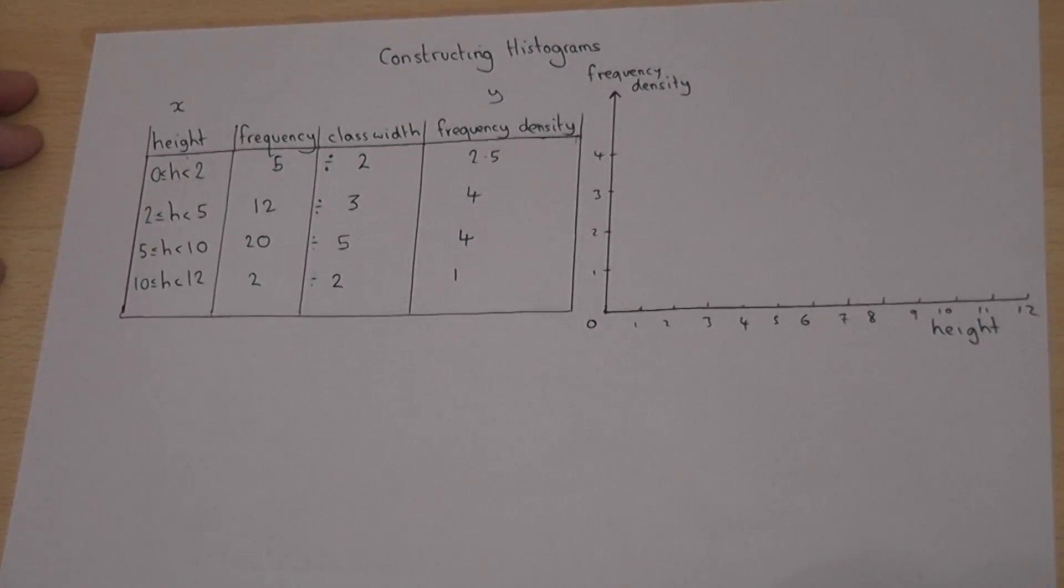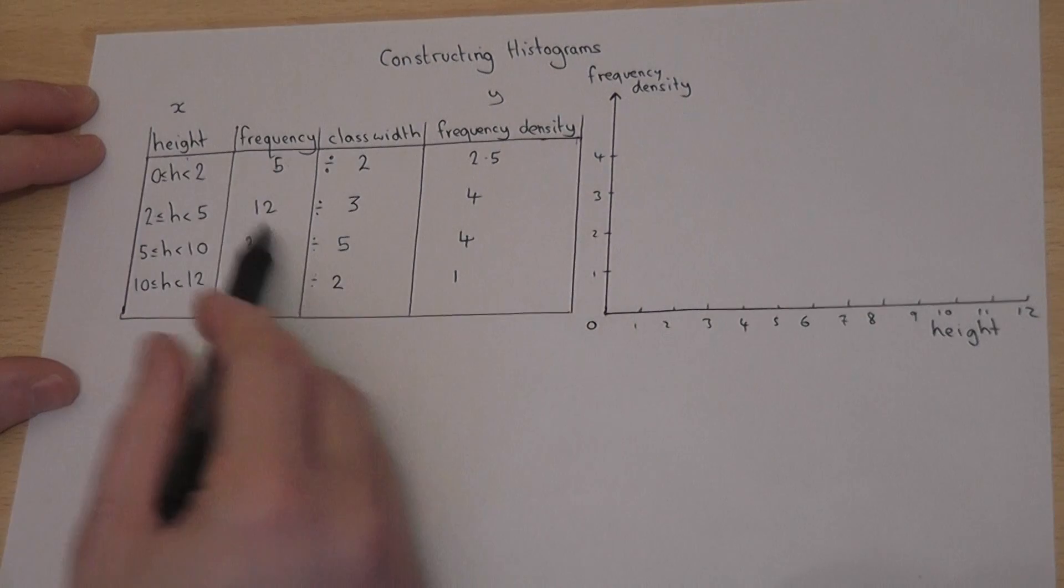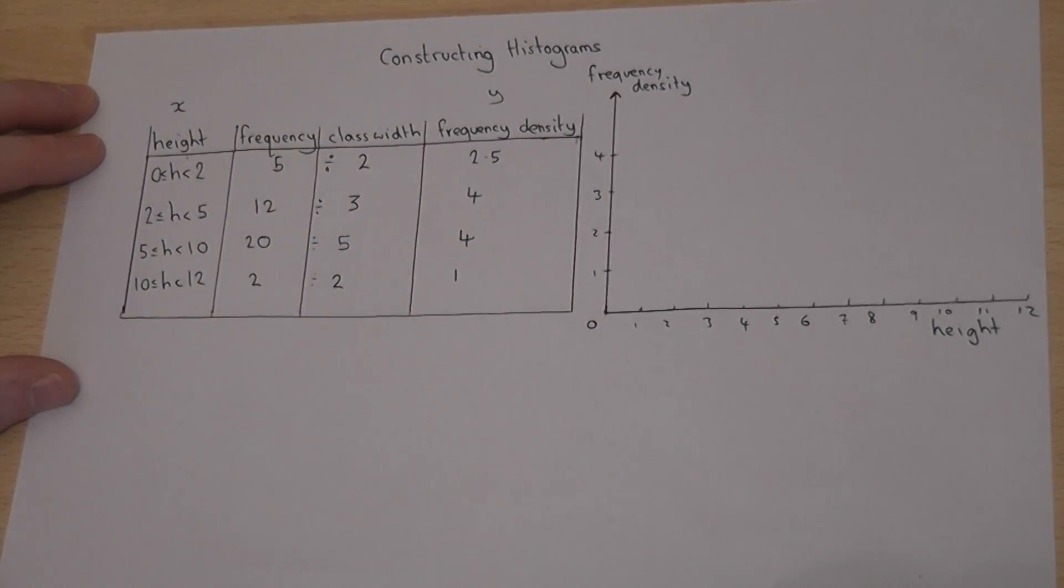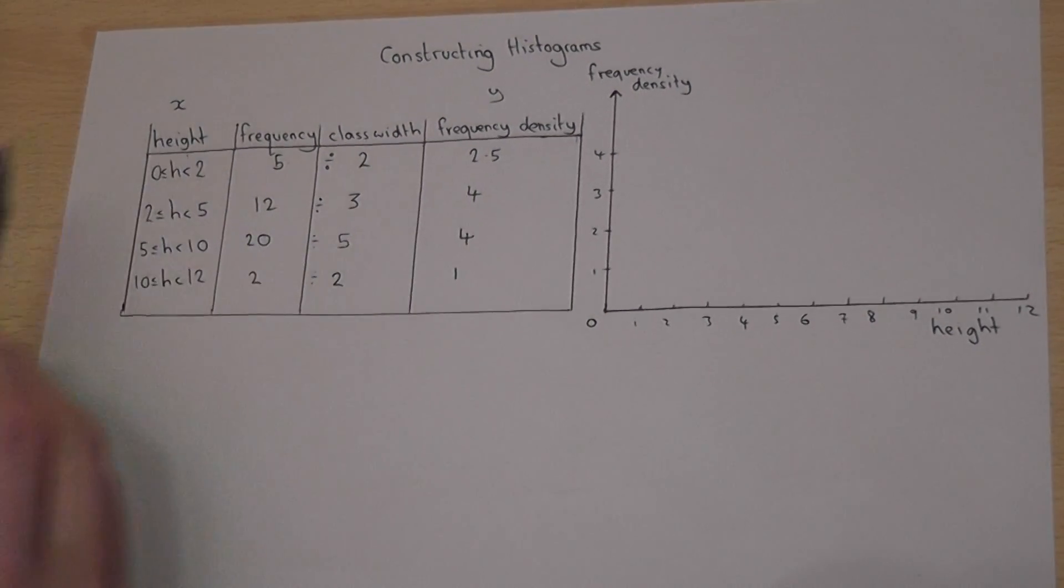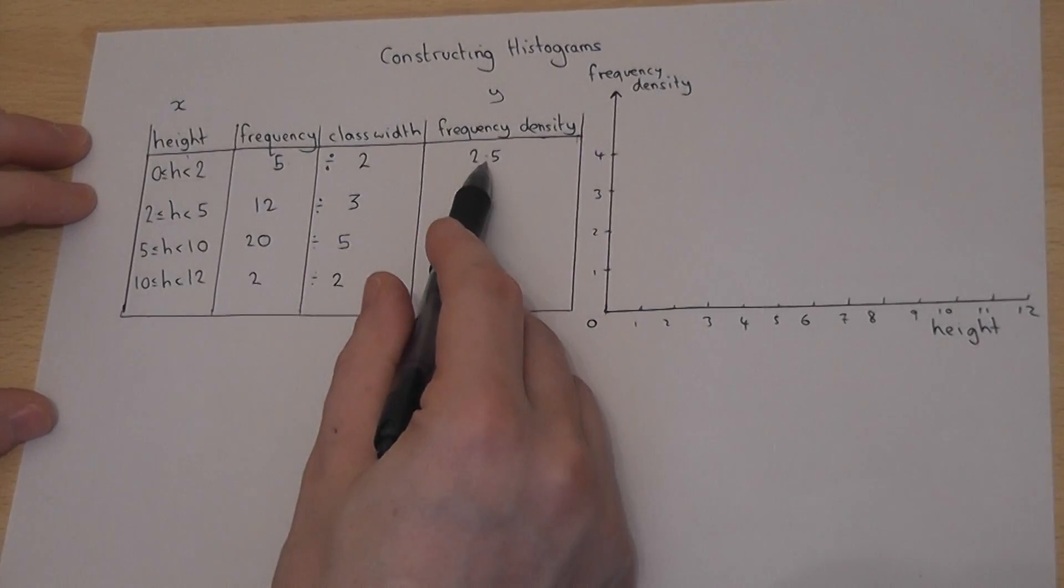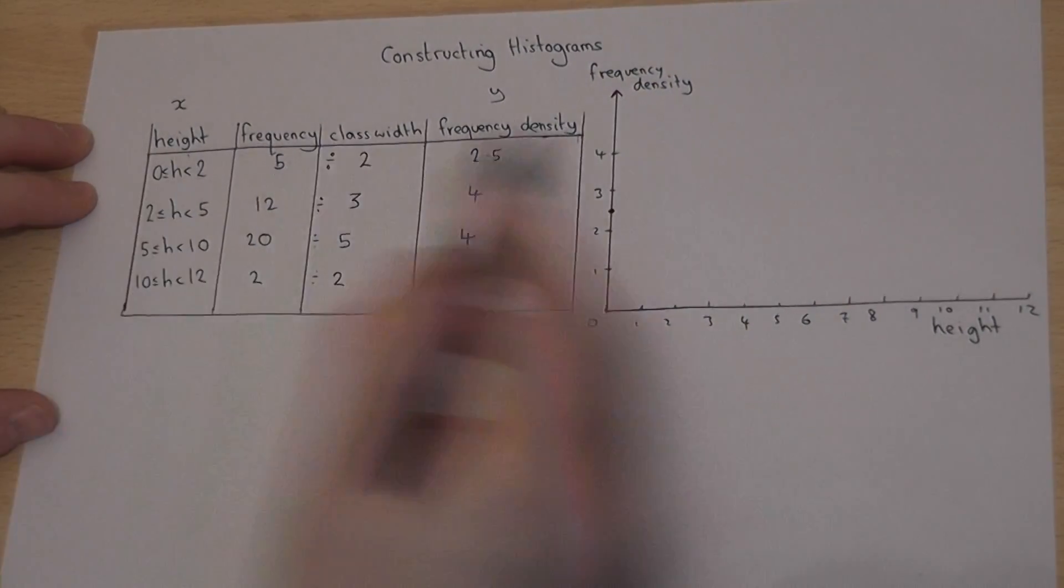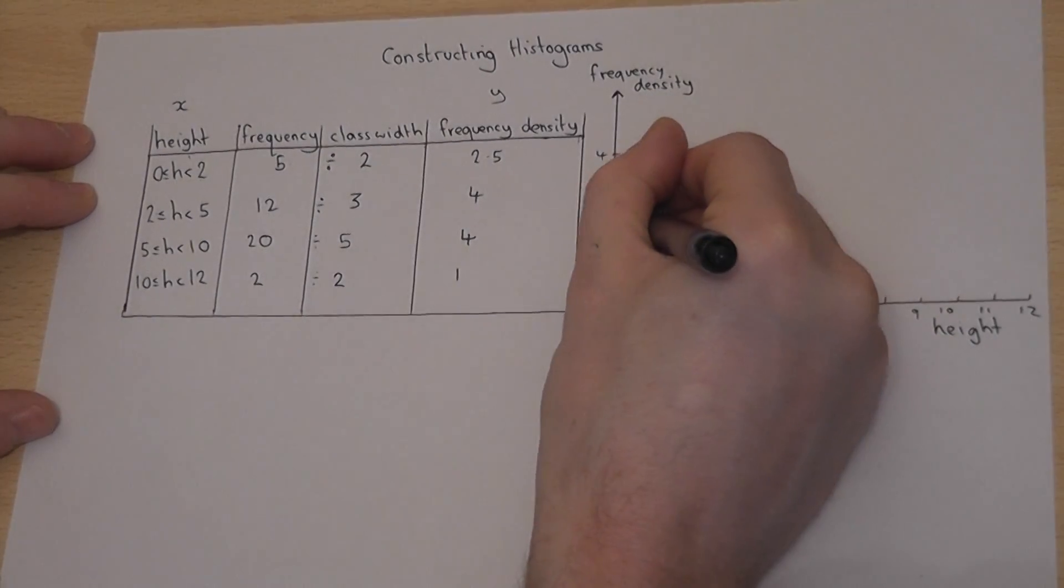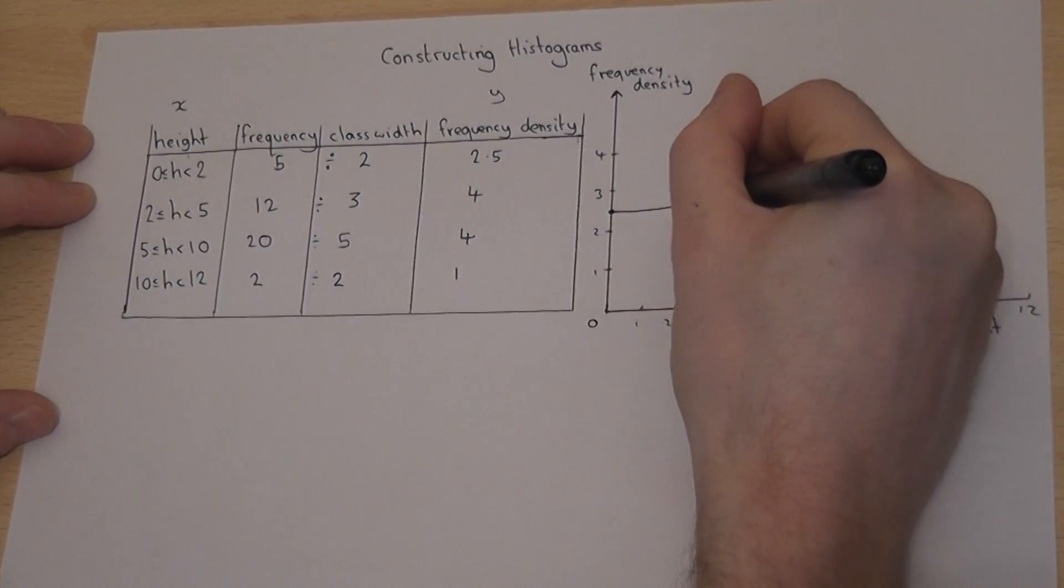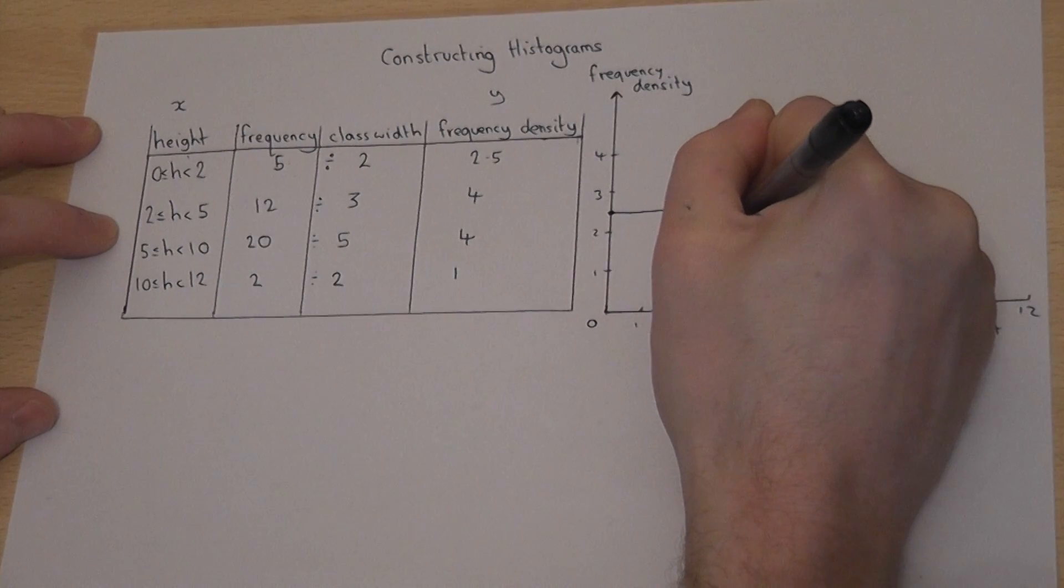Then we draw bars with this height between the relevant numbers. So from 0 to 2, we have a height of 2.5. So I find 2.5, and it's between 0 and 2. So I go across, and then down. Of course normally we would use a ruler for this.